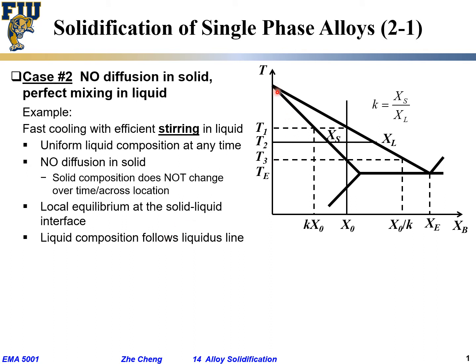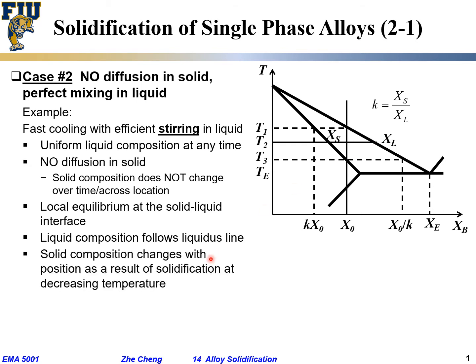The liquid composition at any moment follows the liquidus line, because locally it follows the equilibrium liquidus line, and we also said the liquid composition is uniform due to stirring. The solid composition is a bit more complex: it changes with position as a result of solidification happening at decreasing temperature.